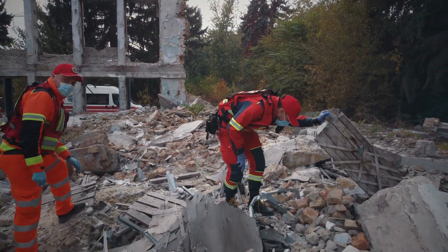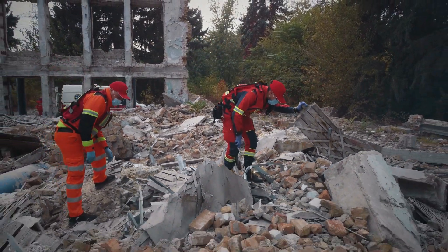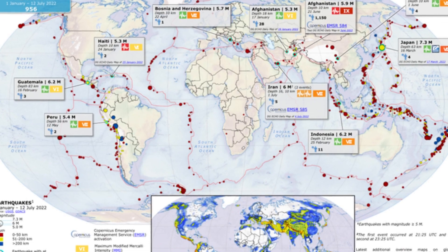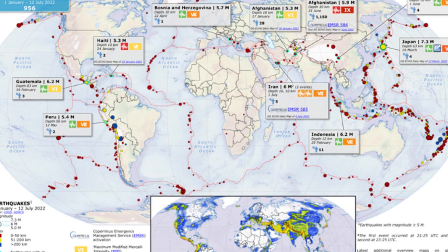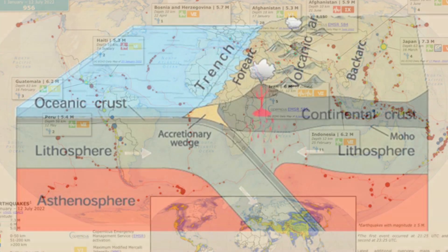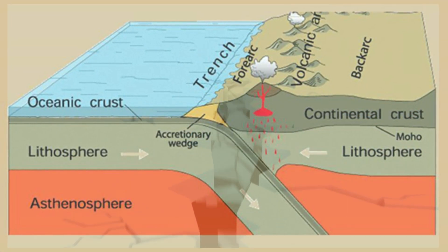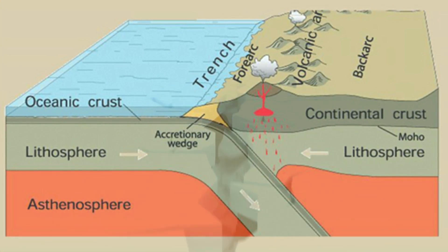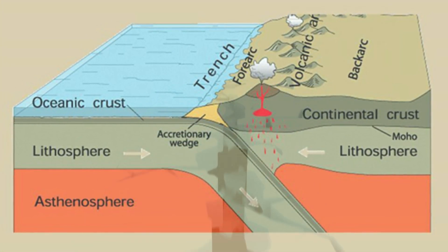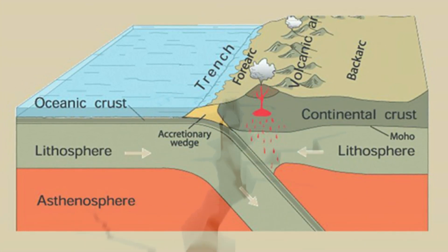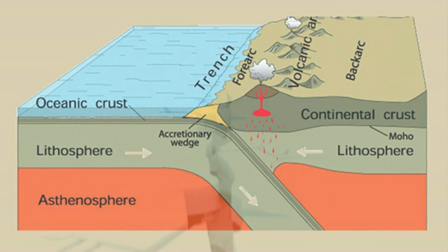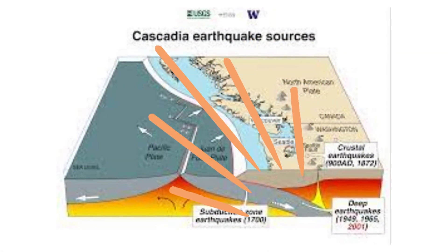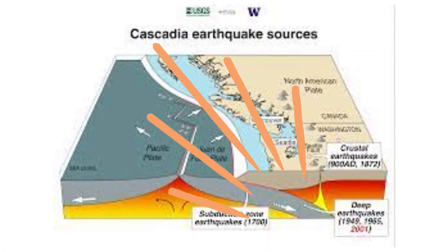Probabilities can be calculated based on the average rate of past seismic activity in a region. This technique is particularly useful in regions where earthquakes have been recorded by seismographs, which first came into wide use in the early 1900s.